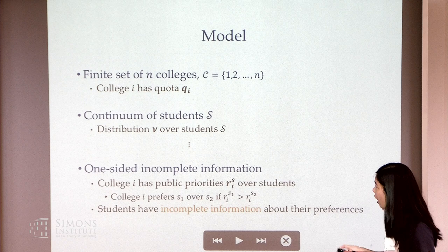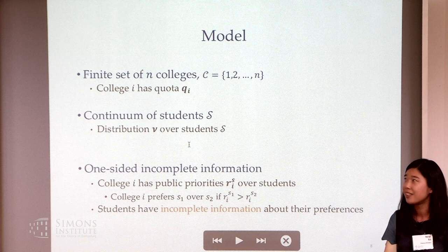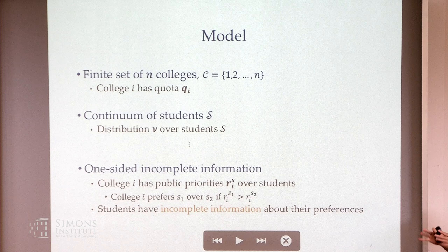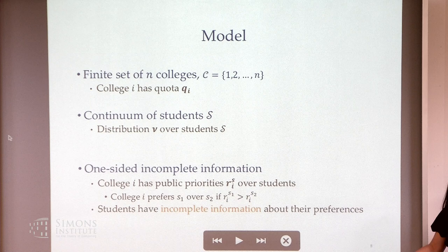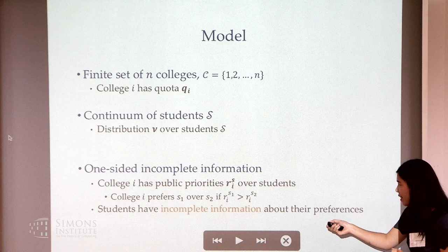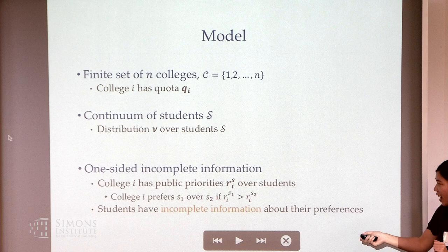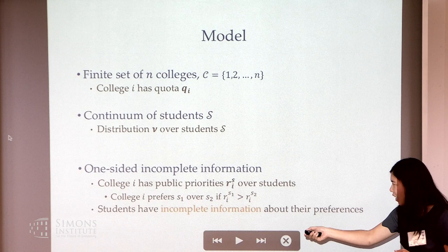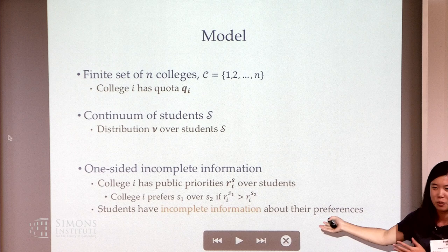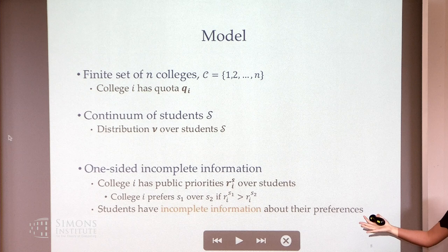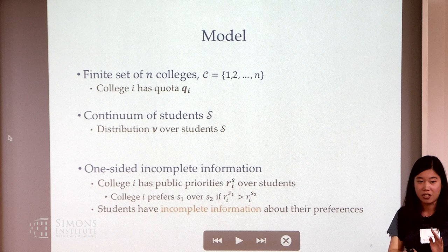We're in a many-to-one matching setting with a finite set of colleges. College i has a quota Q_i for the number of students it can admit, and we have a continuum of students with a distribution over student types. In our model we have one-sided incomplete information: college priorities are public and encoded by R_{si}, where larger priority values mean the student is more preferred by the college.